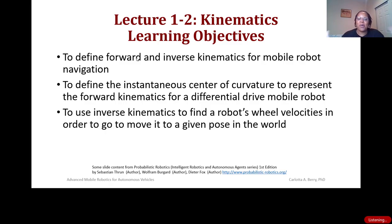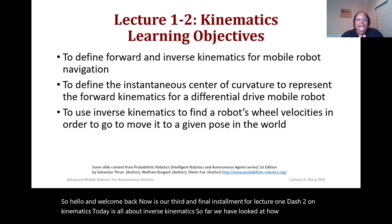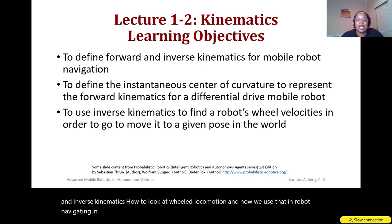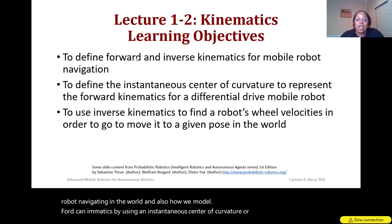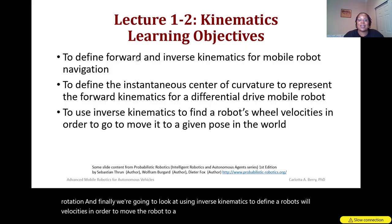Hello and welcome back. This is our third and final installment for lecture 1-2 on kinematics. Today is all about inverse kinematics. So far we have looked at how to define forward and inverse kinematics, how to look at wheeled locomotion and how we use that in robot navigation, and how we model forward kinematics using an instantaneous center of curvature. Finally, we're going to look at using inverse kinematics to define a robot's wheel velocities in order to move the robot to a given motion or pose in the world.